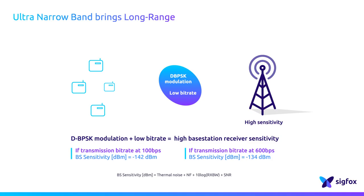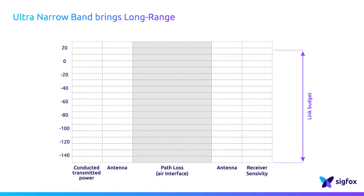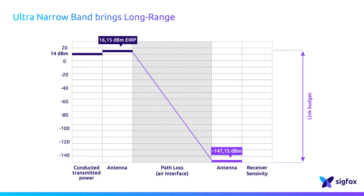Such sensitivity offers a very large link budget. This diagram shows a rough illustration of the link budget in regions where devices transmit at 100 BPS. In an ideal situation, the device can radiate up to 16.15 dBm EIRP. At the base station, the antenna gain is 5.15 dBi and the receiver's sensitivity is minus 142 dBm, so the theoretical link budget reaches 163.3 dB. For countries where devices transmit at 600 BPS, the base station's receiver sensitivity is 8 dB lower. However, this difference is balanced on the device side by a greater radiated power, which can go up to 24.15 dBm EIRP.